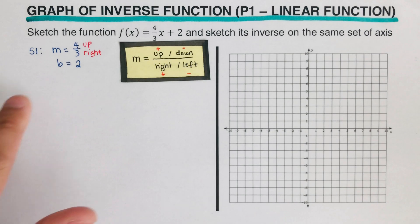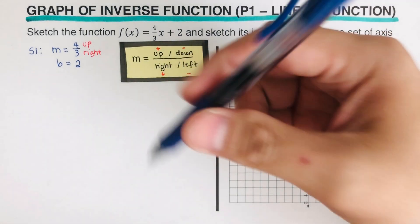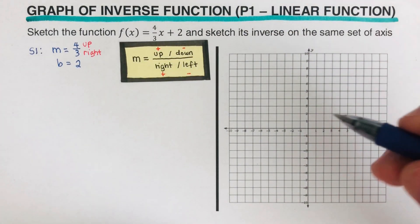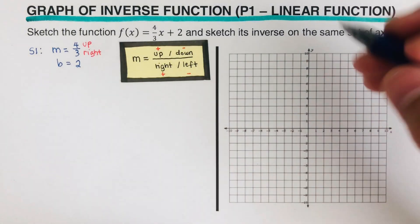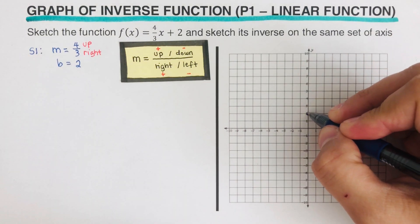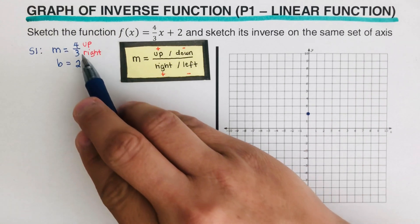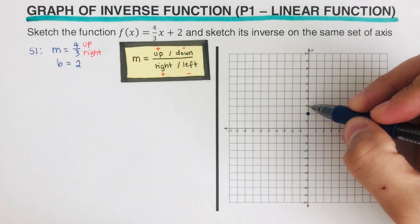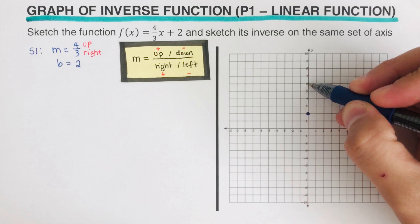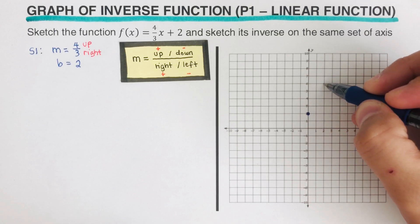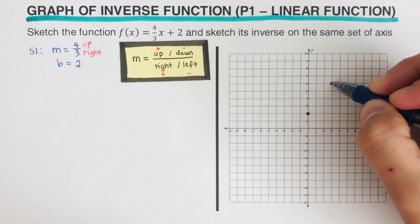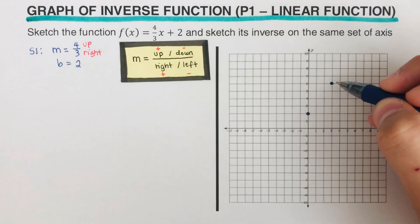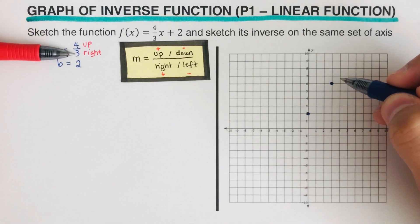So we can go ahead and graph this function using blue. We start with b = 2 as the first dot, then from here we go up 4 and right 3 to get the second dot. We repeat: up 4, right 3 for another point.